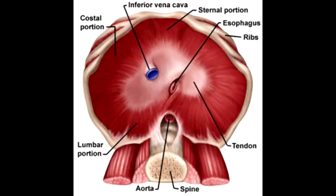What structure perforates the diaphragm at the level of T8? At the level of T8, the diaphragm is perforated by the inferior vena cava. What structures perforate the diaphragm at the level of T10? At the level of T10, the vagus nerve and esophagus perforate the diaphragm.